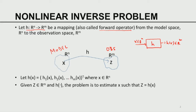H has m components: H1, H2, ..., Hm transpose, where X is in Rn. Given Z in Rm and the nature of the function H, our problem is to estimate X such that Z equals H of x. This is the nonlinear version of the linear least square problem. In the linear problem, H was a matrix; now it takes the form Z equals H of x, and our goal in this module is to solve this nonlinear case.